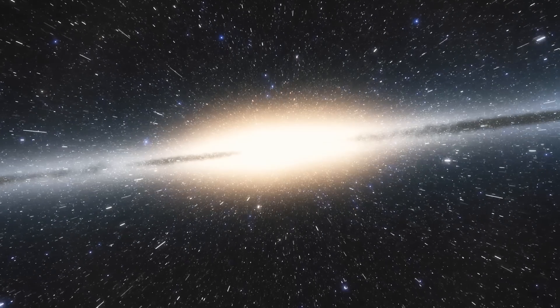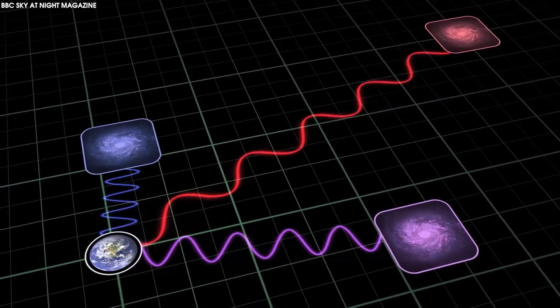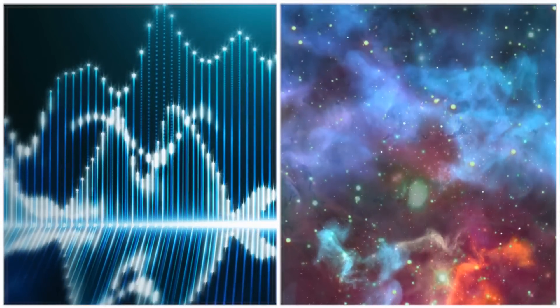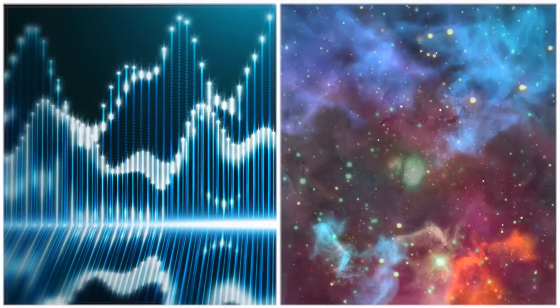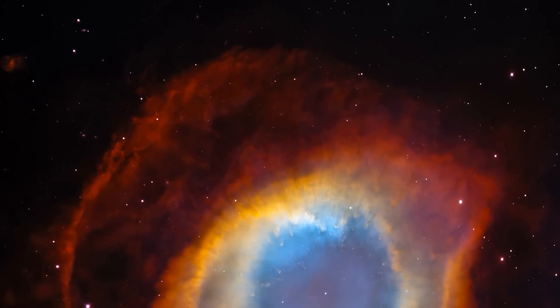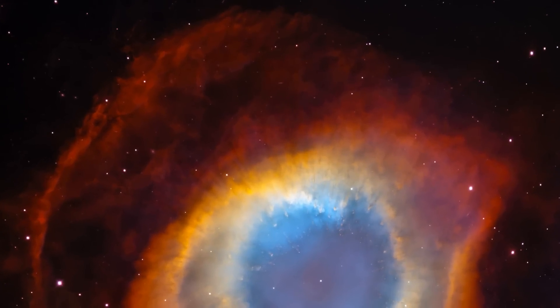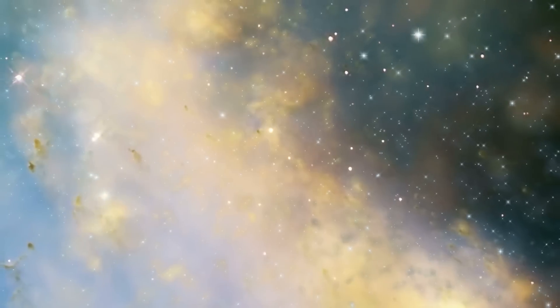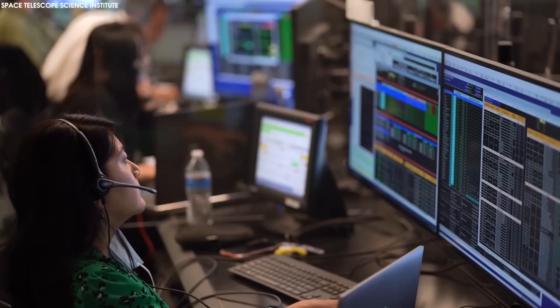The expanding universe causes all the light that travels through the universe to stretch in wavelength. As the wavelength stretches, it loses energy and becomes cooler. This means the universe was hotter in the distant past, a fact we've confirmed through observations of distant features in the universe.